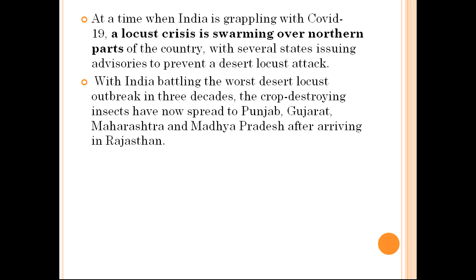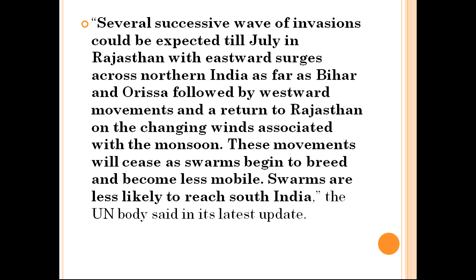Several successive waves of invasions could be expected till July in Rajasthan, with eastward surges across northern India as far as Bihar and Orissa, followed by westward movements and a return to Rajasthan on the changing winds associated with the monsoon. These movements will cease as swarms begin to breed and become less mobile. The UN body stated that swarms are less likely to reach South India.